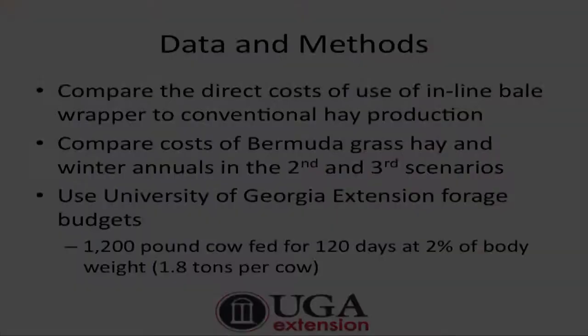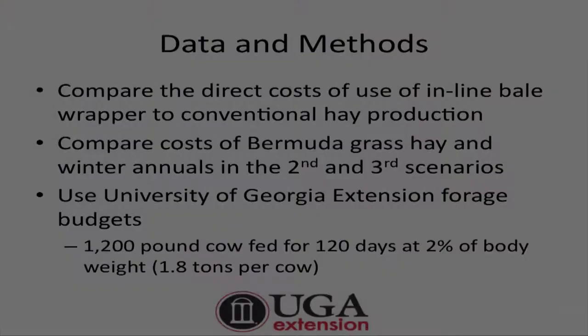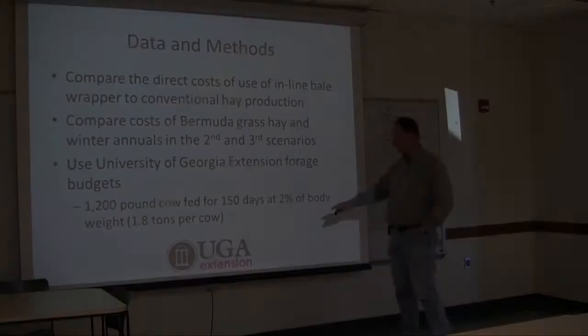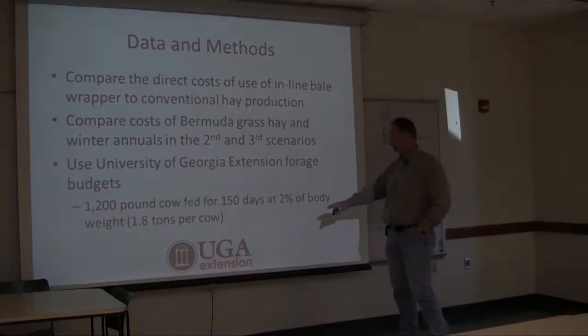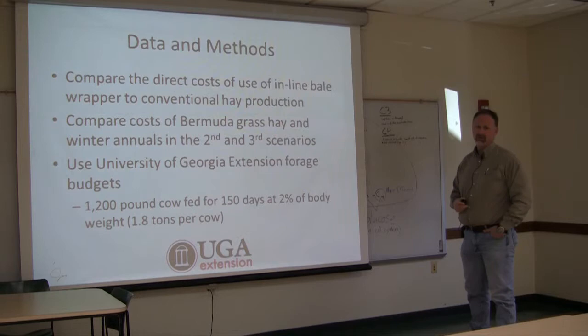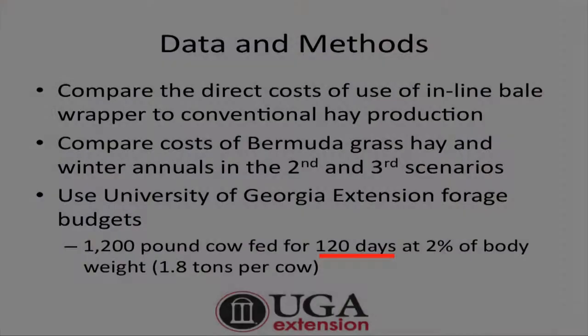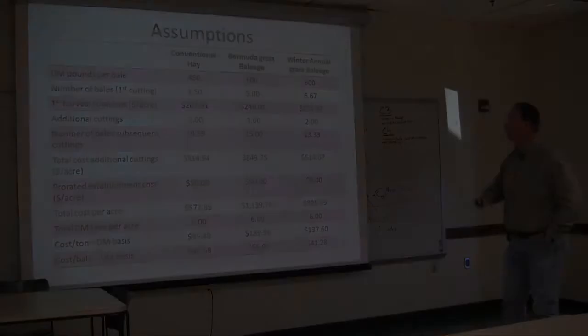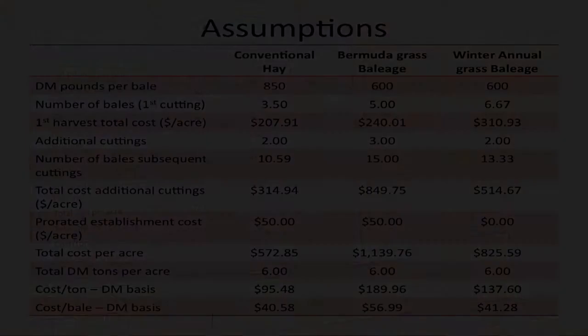Dr. Pruitt, Dr. Hancock, and I looked at the economics of baleage by comparing the direct cost of using an inline bale wrapper to conventional hay production for bermudagrass and winter annuals, using our published UGA extension budgets. We're talking about a 1,200-pound cow fed for 120 days at two percent of body weight, which works out to 1.8 tons per cow.